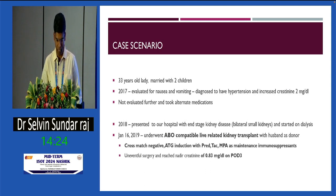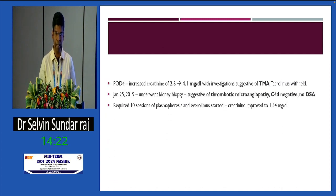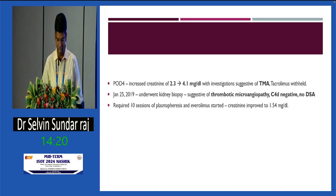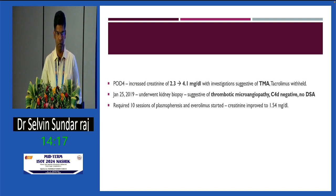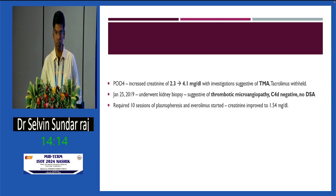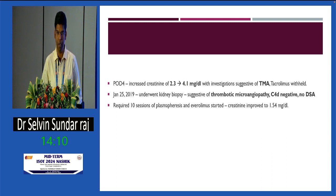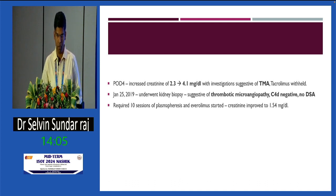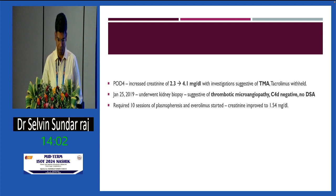Surgery was uneventful. On post-op day 4, she developed graft dysfunction. Peripheral blood investigation was suggestive of TMA. Tacrolimus was withheld, and she underwent kidney biopsy. Biopsy was suggestive of thrombotic microangiopathy. C4-D was negative, DSA were negative. She required 10 sessions of plasmapheresis and everolimus was started later.